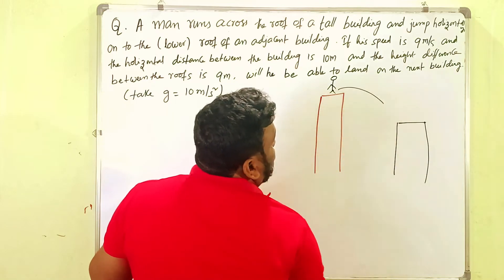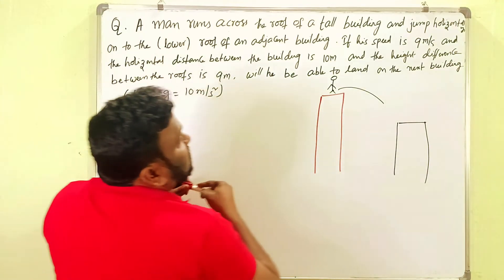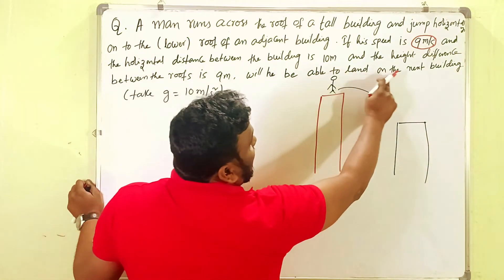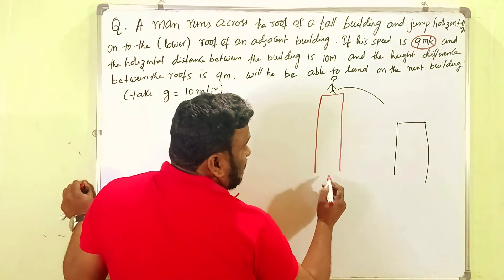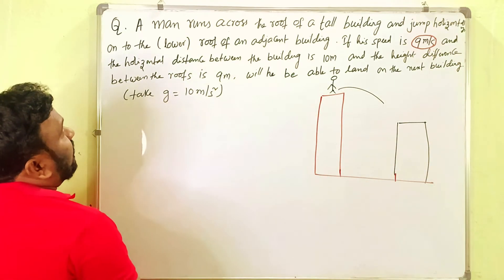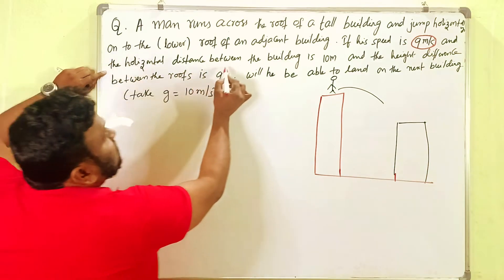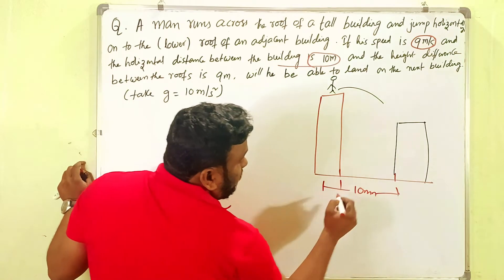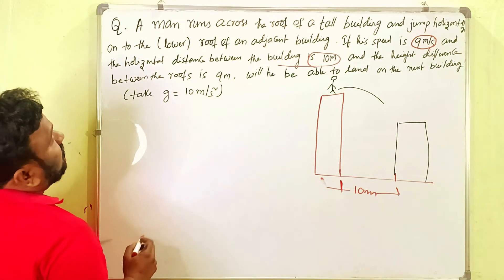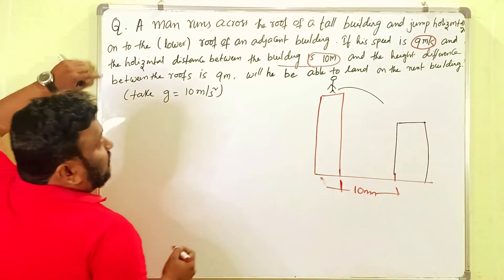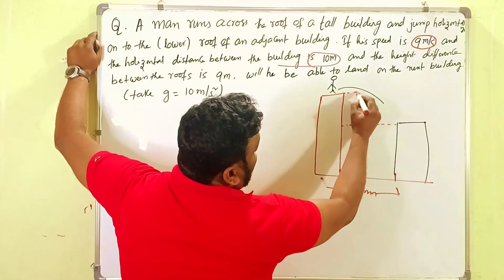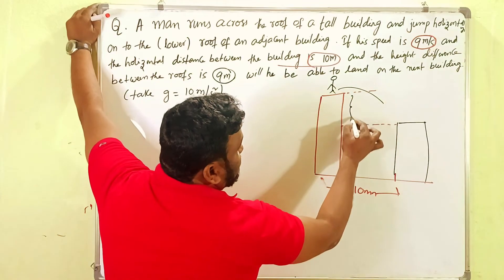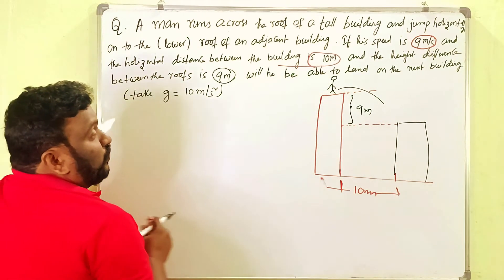He wants to jump at a speed of 9 meters per second. Will he be able to land on the next building? That we need to find out. The horizontal distance between the two buildings is 10 meters. The height difference between the roofs is 9 meters.